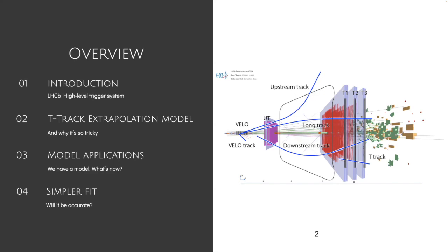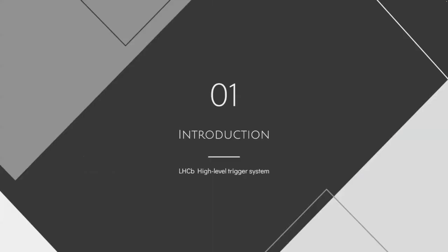Depending on which detectors a particle flies through, the corresponding track will have a different name. For example, if a particle flies through all three detectors it leaves a so-called long track. In my work we focused on so-called T-tracks — tracks that have hits only in the last SciFi detector, specifically in the last three T-stations highlighted on the right-hand side of the plot.